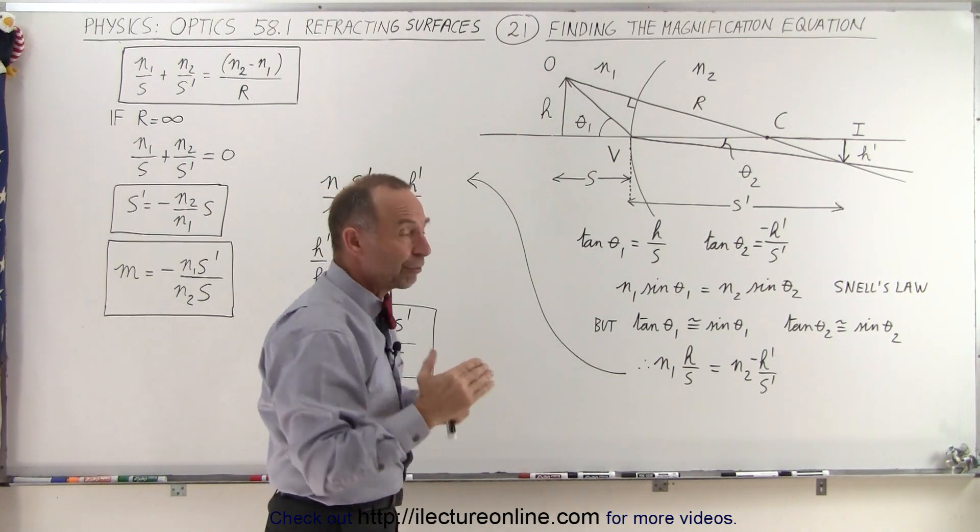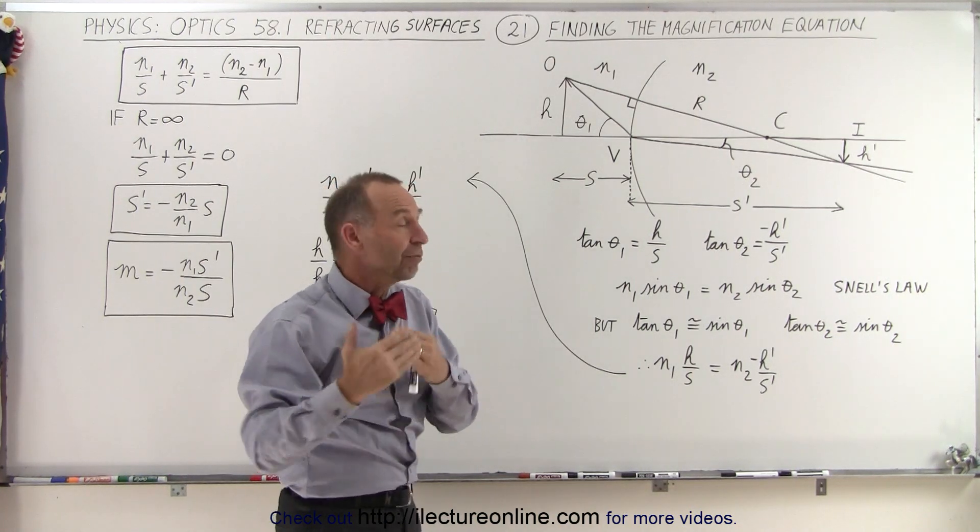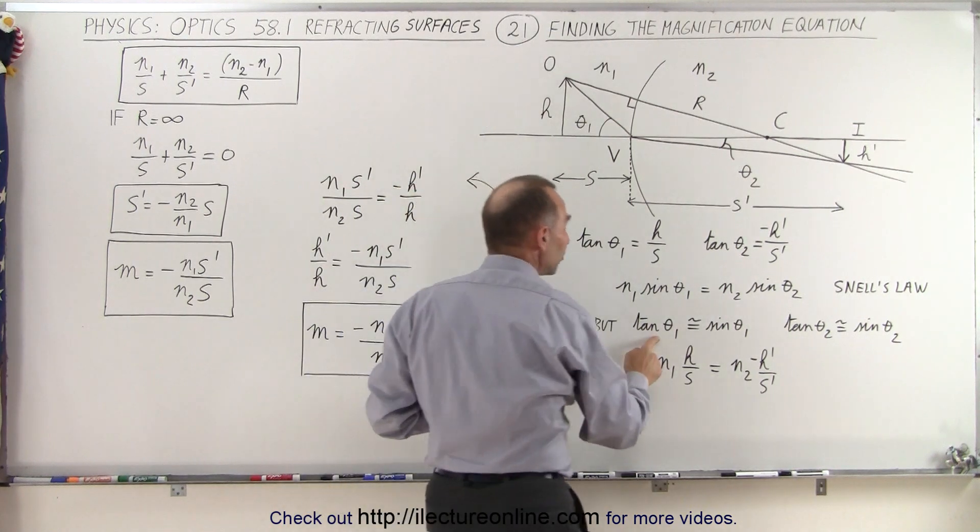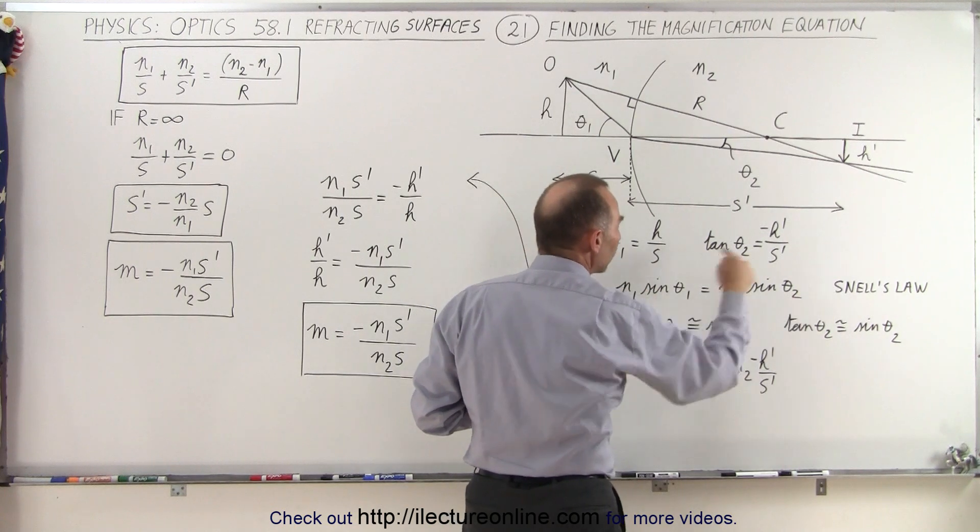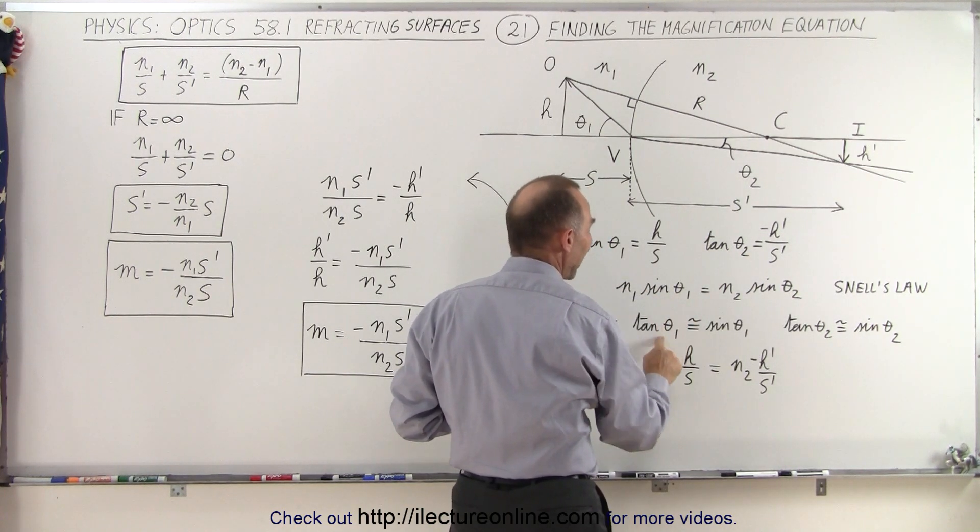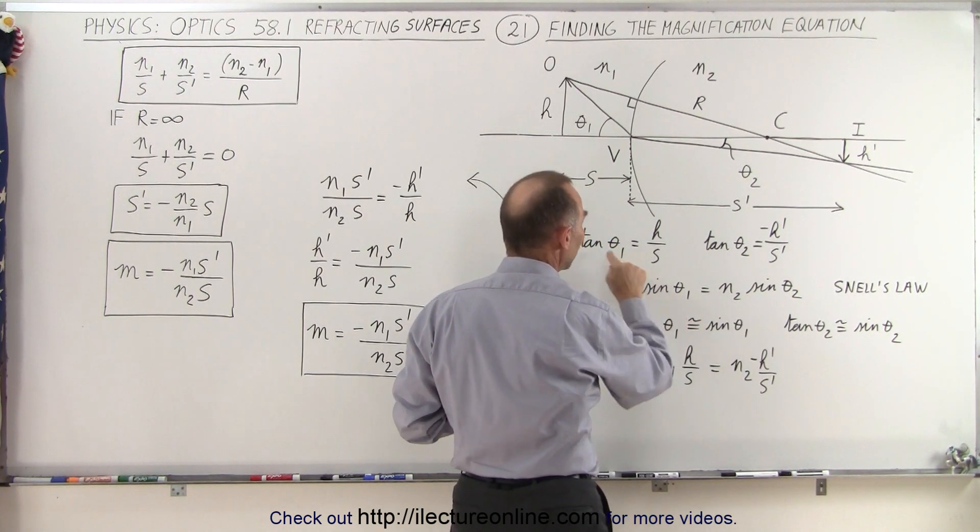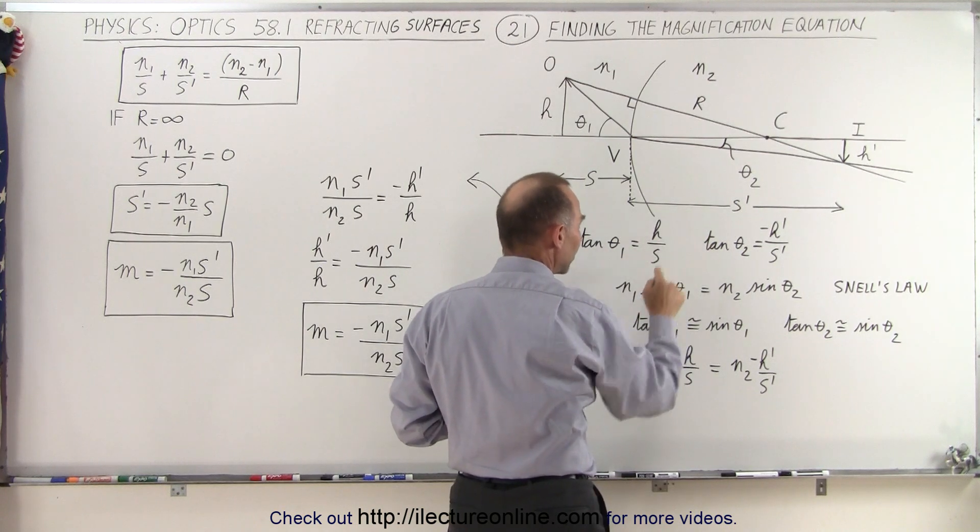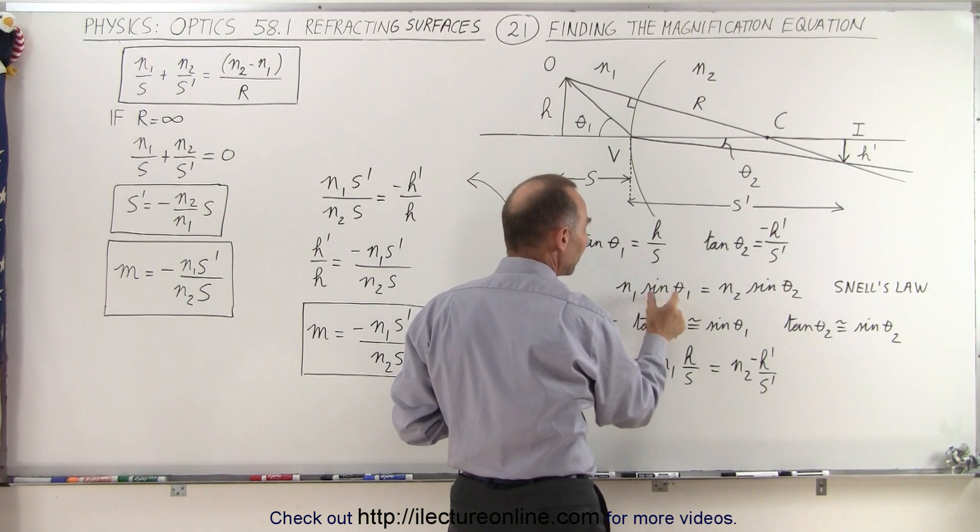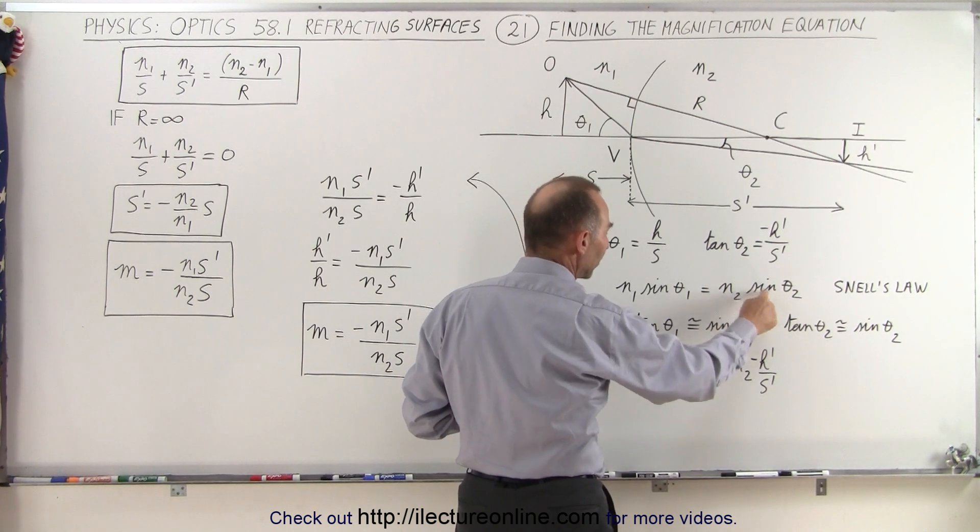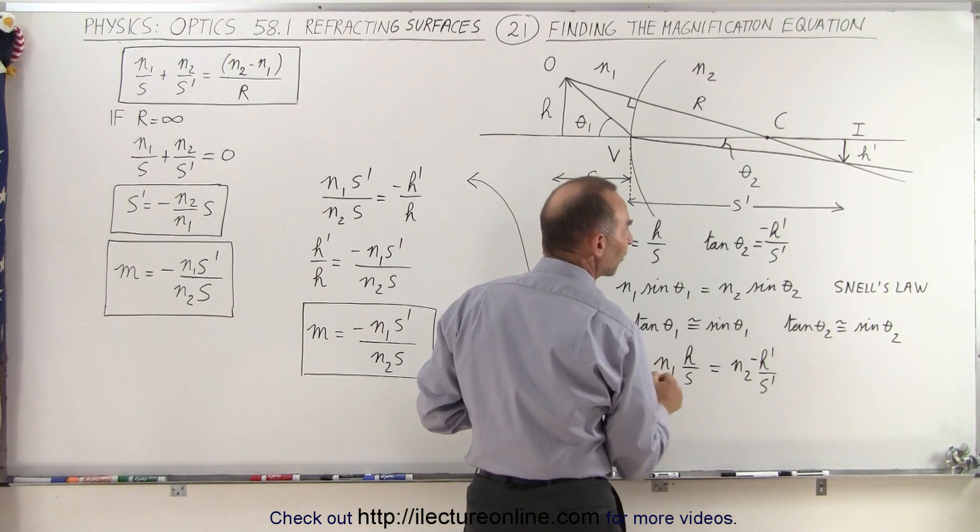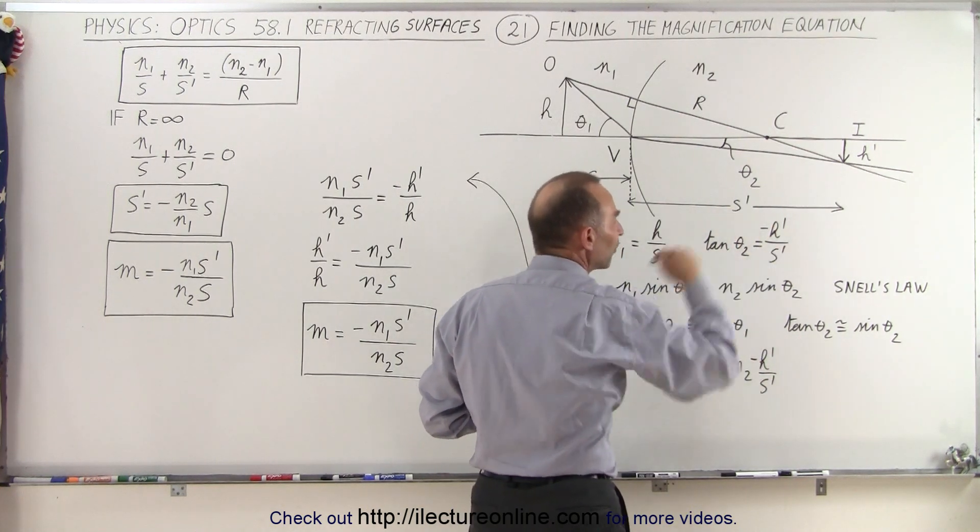Then we also know that for very small angles, and these are indeed very small angles, that the tangent of theta is approximately equal to the sine of theta. So we can take the Snell's Law equation and replace sine of theta with tangent of theta. Since tangent of theta is equal to H over S here, we can replace sine of theta by H over S, and over here, the sine of theta can be replaced by negative H prime over S prime, which is the tangent of theta sub 2.